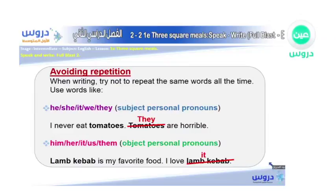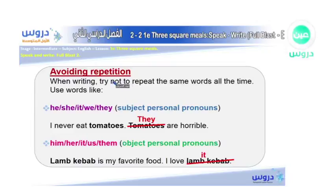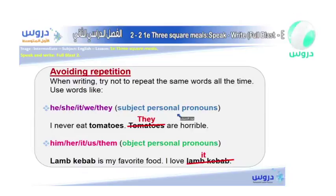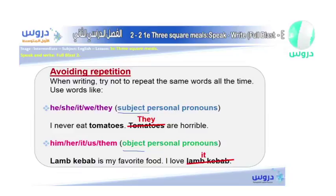Here we want to learn something called avoiding repetition. What do we mean by repetition? It's from the word 'repeat,' which means we mention the same thing again and again. When writing, try not to repeat the same words all the time. Use words like he, she, it, we, they — which are the subject personal pronouns. For example: 'I never eat tomatoes. They are horrible,' instead of saying 'Tomatoes are horrible.' When it comes to an object, use him, her, it, us, them — the object personal pronouns. For example: 'Lamb kebab is my favorite food. I love it.' Subject pronouns come at the beginning of the sentence; object pronouns come at the end.